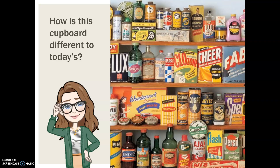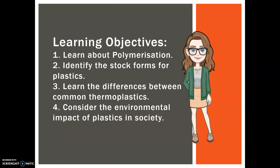So hopefully you have realised that we've got a lot of glass bottles, corrugated board boxes, and some tins. What's not there? Plastic. So today we're going to learn about different types of plastics, polymerisation, identify stock forms, learn about the differences between common thermoplastics, and consider some environmental impacts.